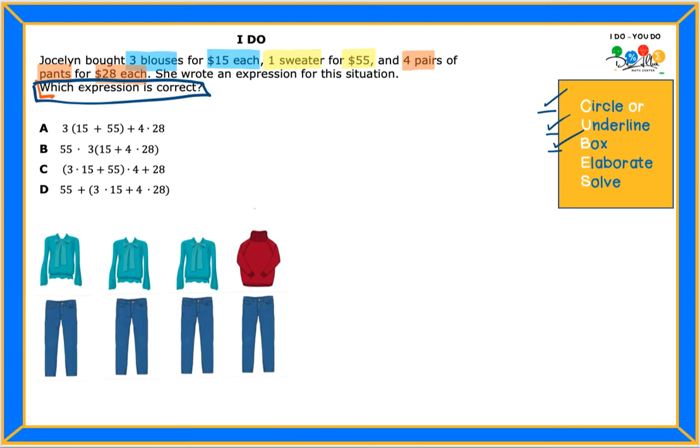I'm trying to represent the situation that we have on the top. The blouses, I used a blue color for identifying the number of blouses and the price. Each of this is fifteen dollars. For the sweater, I did it in yellow,